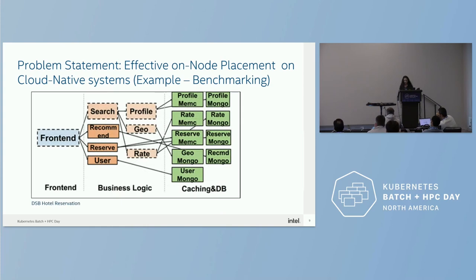The second benchmark we used was the DeathStar Bench Hotel Reservation System — a microservice-based platform providing search and recommendation capabilities for hotels, with a clear split into three tiers. The difference here was separate databases for different parts of the data model and a caching layer. These two applications had very different scaling behavior and reacted very differently to pod placement strategies on the cluster. Hotel Reservation had a clear bottleneck at the database components — running just one instance of the databases turned out to be a bottleneck.